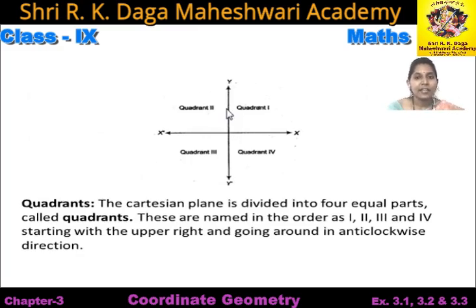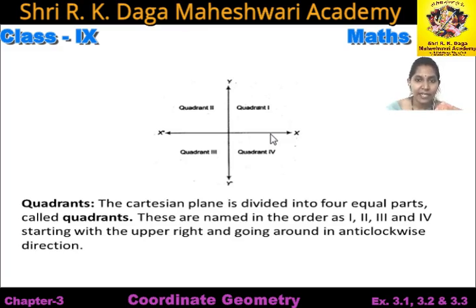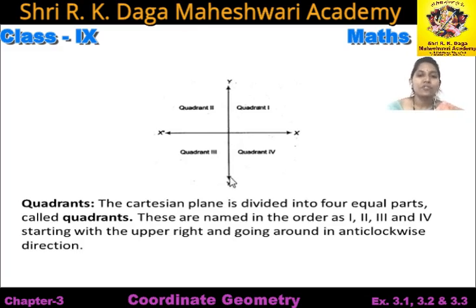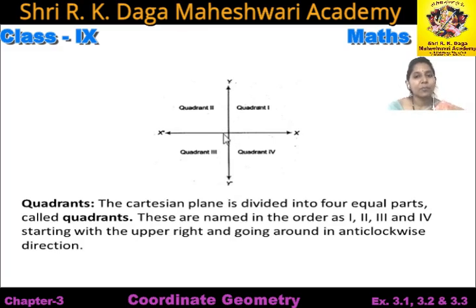In this diagram you can see these are two number lines. This horizontal line is called x-axis and this vertical line is called y-axis. X-axis me jo right hand side hai, is right hand side me all numbers are positive and on left hand side all numbers are negative. On y-axis, all numbers which are on the upward side are positive. Ab yeh dono x-axis ek dusre ko kisi point pe intersect karte hain, so this point is called origin.